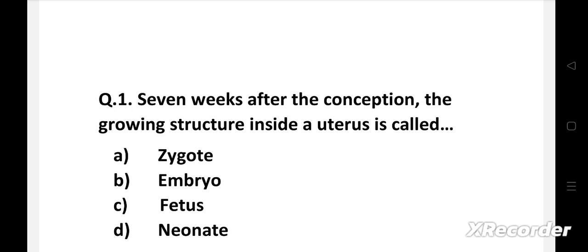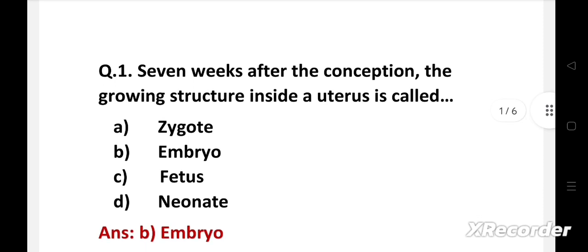Question number one: Seven weeks after the conception, the growing structure inside a uterus is called. Option A: zygote, B: embryo, C: fetus, D: neonate. Right answer is option B: embryo.